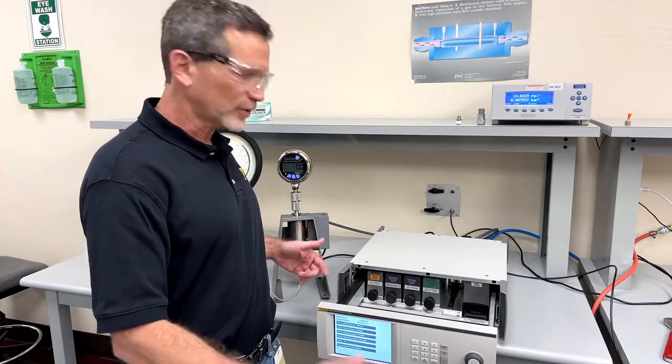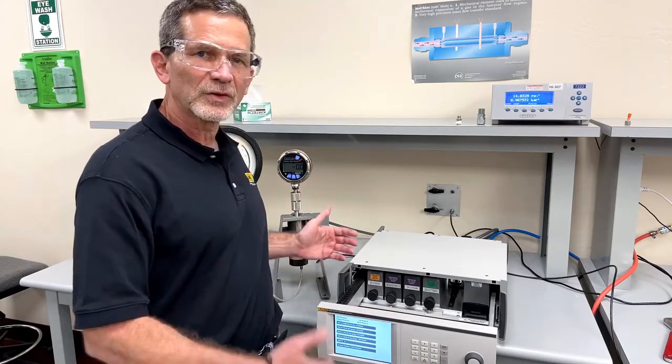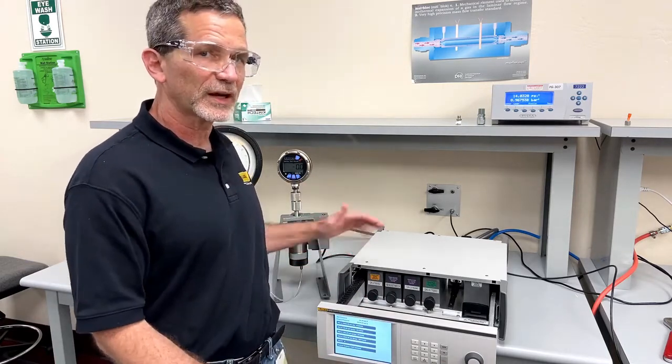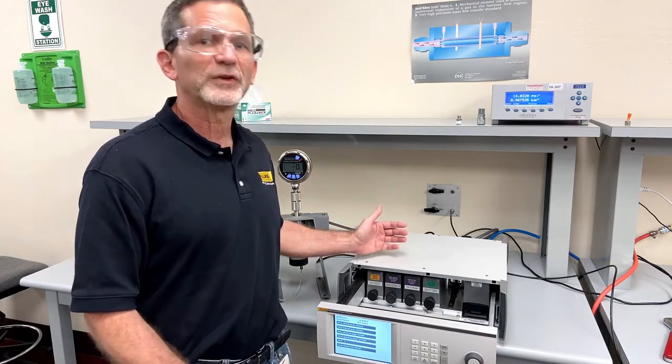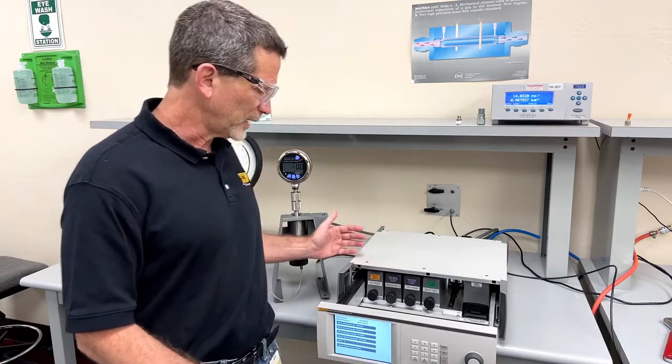All of our pressure controllers have very wide-ranging turndown, so you can just as easily do a 6,000 PSI calibration with the 8270 as you can a 50 PSI calibration without having to make any changes.